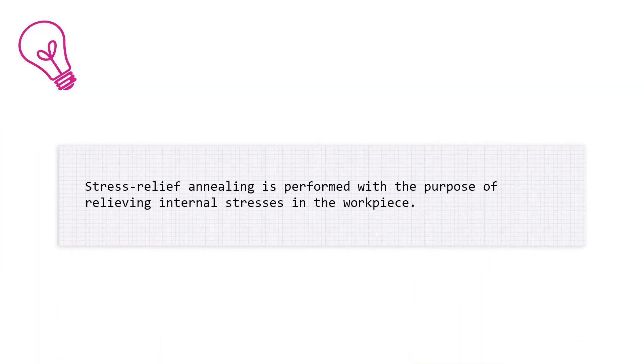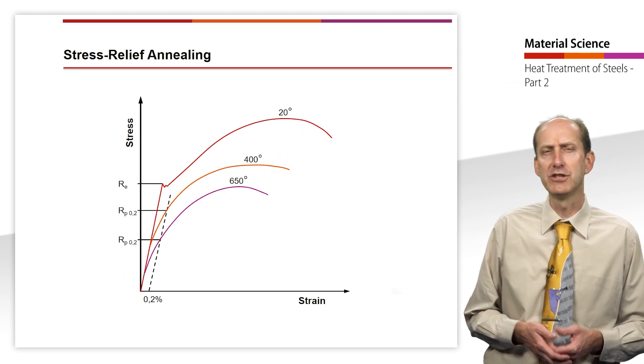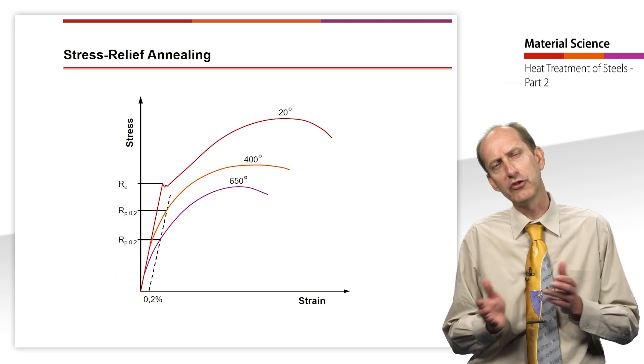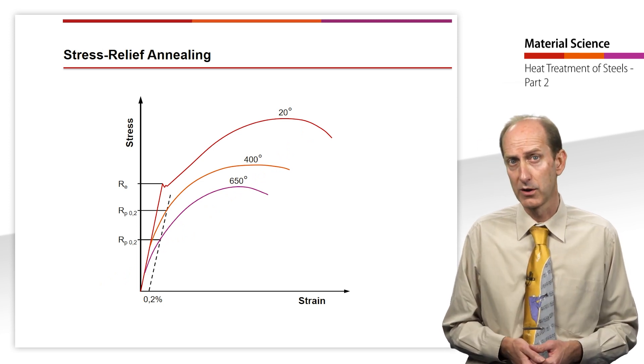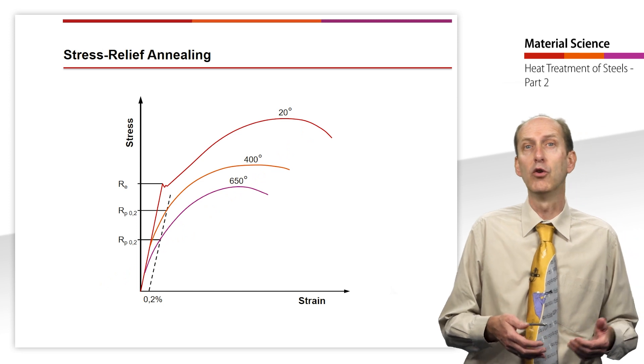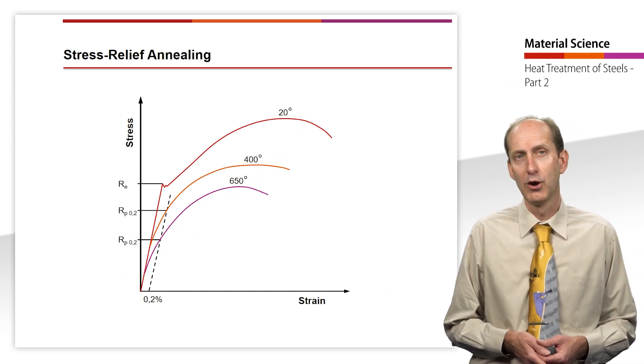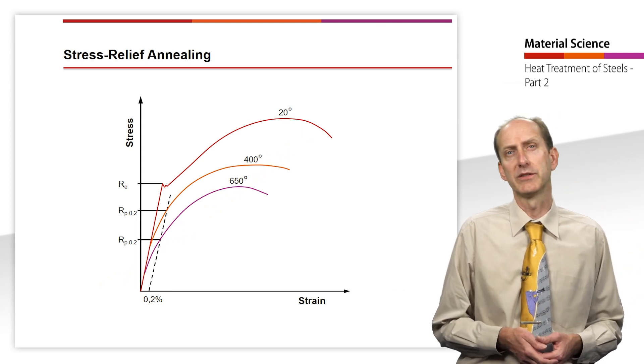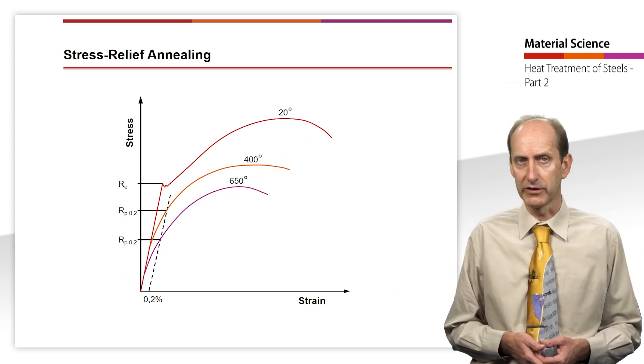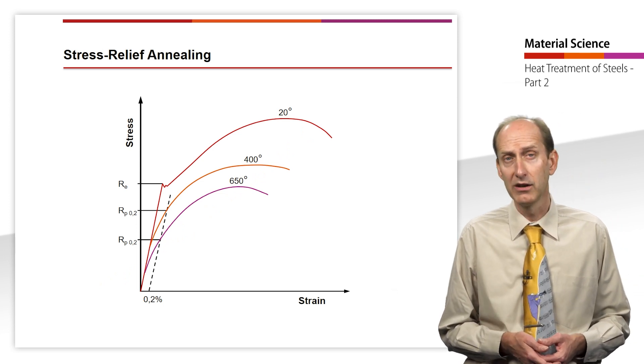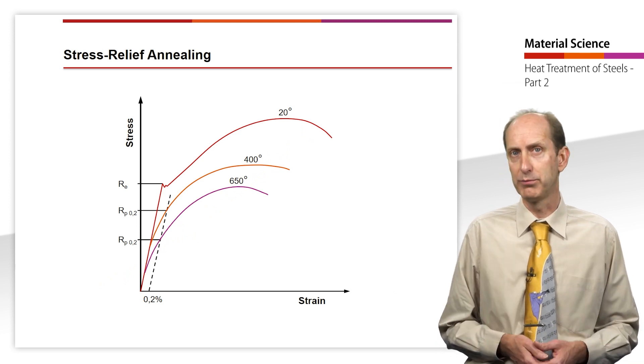Stress-relief annealing is performed with the purpose of relieving internal stresses in the workpiece. Stress-relief annealing is usually carried out on steel in the temperature range of 550 to 650 degrees Celsius, whereby the material begins to flow plastically in accordance with the stresses. Workpieces treated with this process have internal stresses, mostly caused by uneven cooling after casting, welding, forging or other thermal processes.